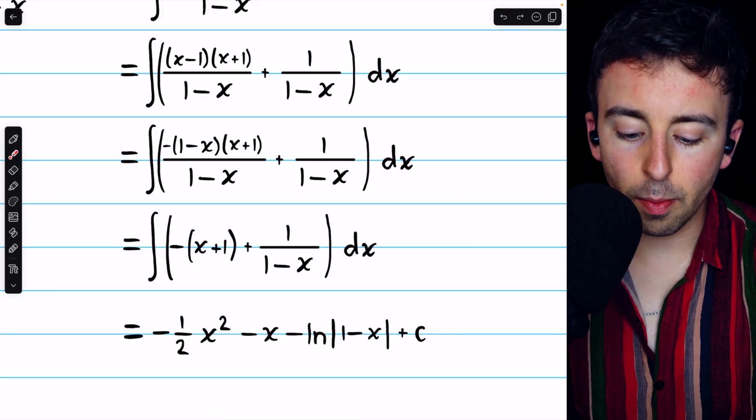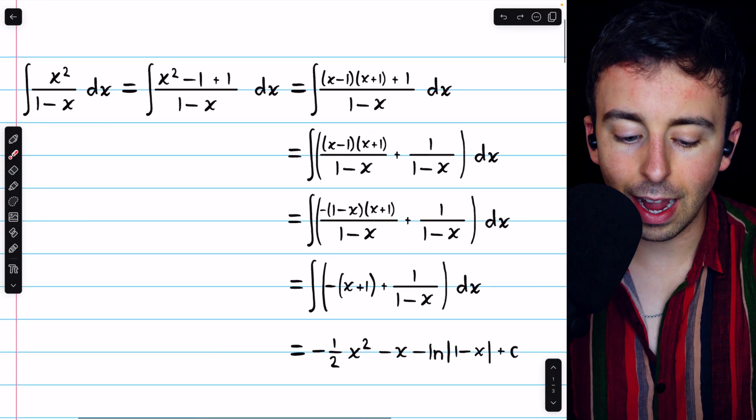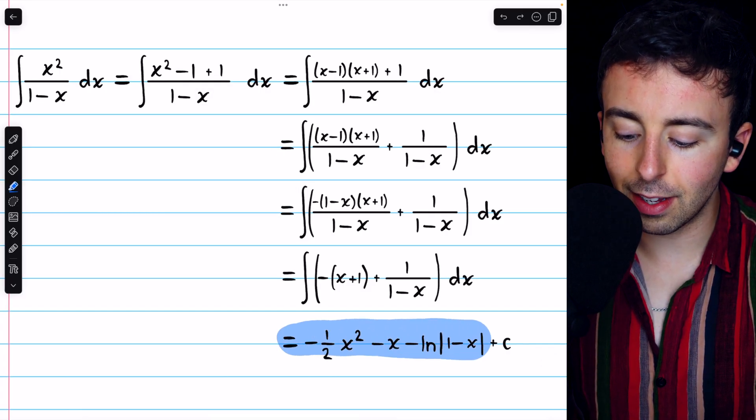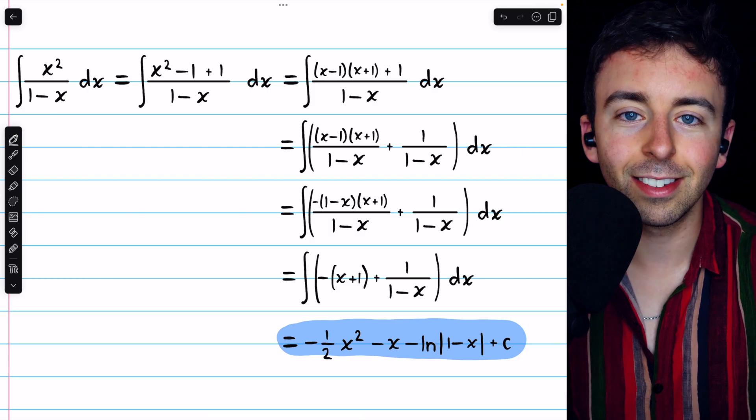And then, of course, add the arbitrary constant, and that's it. The integral of x squared over 1 minus x is negative half x squared minus x minus the natural log of the absolute value of 1 minus x plus c.